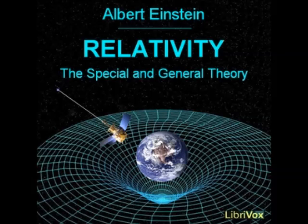By means of purely theoretical operations, i.e. simply by calculation, we are then able to find how this known natural process appears, as seen from a reference body K' which is accelerated relatively to K. But, since a gravitational field exists with respect to this new body of reference K', our consideration also teaches us how the gravitational field influences the process studied.